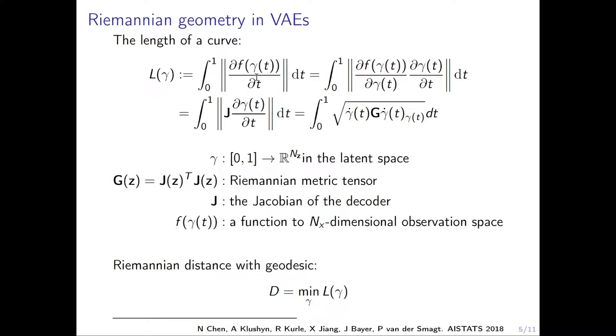Given a velocity here, if we integrate it, we can get the length of a curve. Here, gamma is a curve in the latent space, and f is a function. In our case, it's the decoder of the VAE. Following the chain rule, we can rewrite the velocity as here, the Jacobian and the velocity on the curve of the latent space. And we can get Riemannian metric tensor G, which is equal to Jacobian transpose times Jacobian. We can have the definition of Riemannian distance with geodesic. We minimize the length to get it.